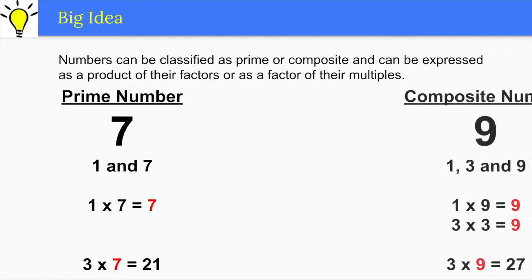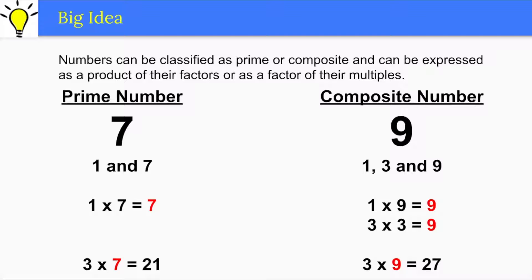On the other hand, the number 9 is composite because it has more than two factors: 1, 3, and 9. Nevertheless, it is also the product of its factors as well as the factor of its multiple, the number 27.